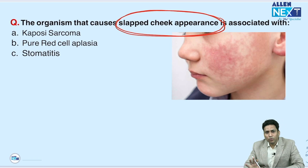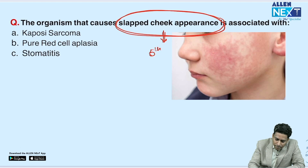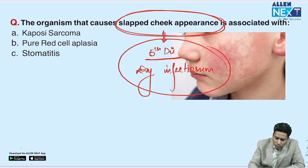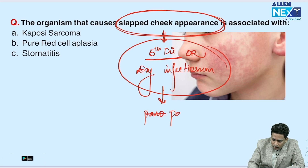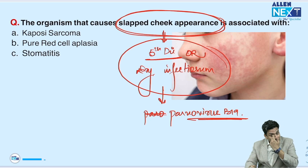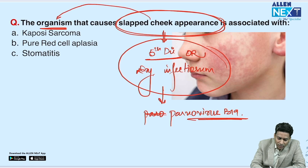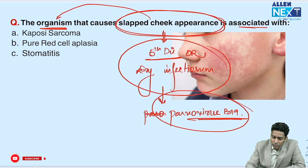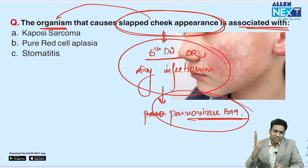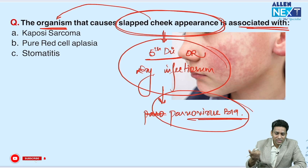The next question covered slap cheek appearance. This is seen in fifth disease — erythema infectiosum — and the causative organism is Parvovirus B19. They were not just asking about the causative organism, but what else Parvovirus B19 is associated with, since this virus does more than just cause the characteristic slap cheek rash.